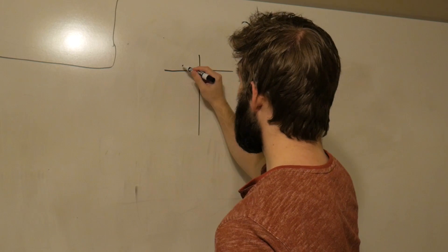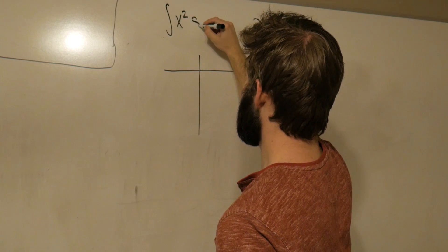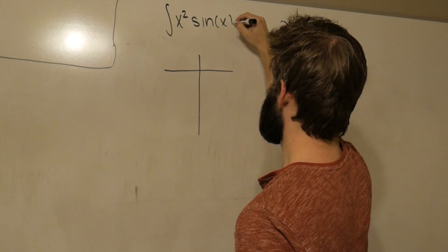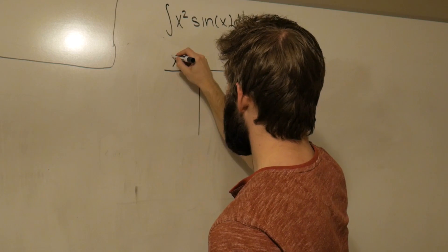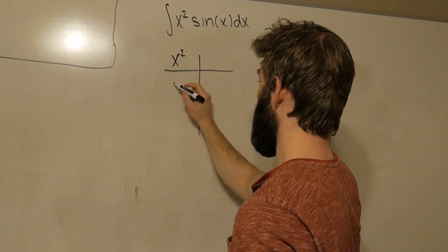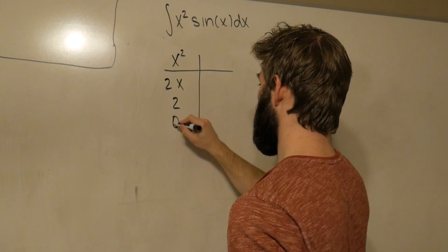Now, the thing that we're going to differentiate is always going to be something that we can differentiate to 0 at some point. Meaning, since we're interested in the integral of x² sin(x) dx, x² is something we can differentiate to 0, right? We have x². Derivative of that is just 2x. Derivative of that is just 2 and 0. There we have it.